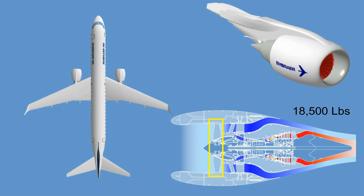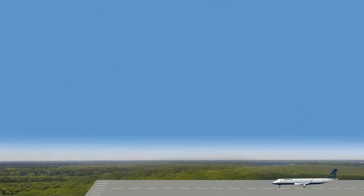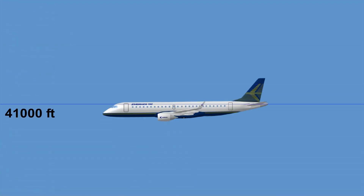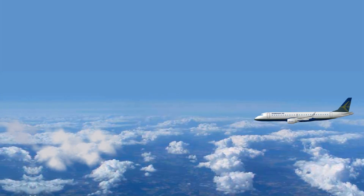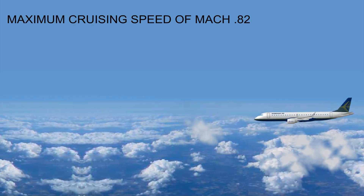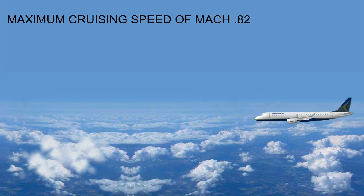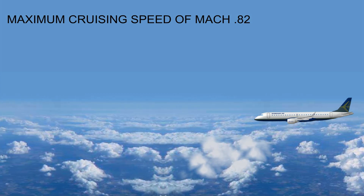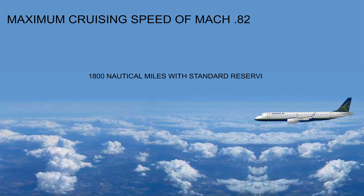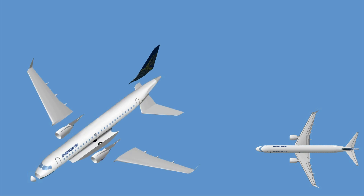To enhance aircraft braking capability, the engines are able to reverse thrust. The Embraer 190 is designed to operate from short runways and has a certified ceiling of 41,000 feet. It has a maximum cruising speed of Mach 0.82, and depending on the range variant, can reach destinations upwards of 1,800 nautical miles with standard reserves. To maximize performance, modern composites like fiberglass and carbon have been used, as these materials are lighter and more durable than conventional aluminum.